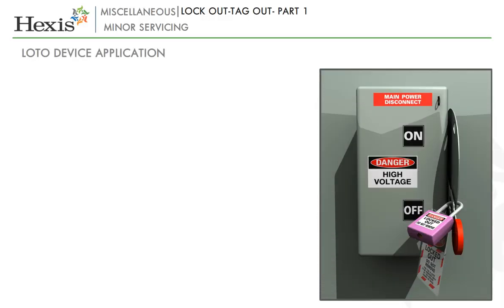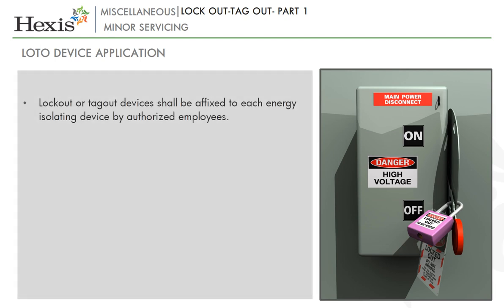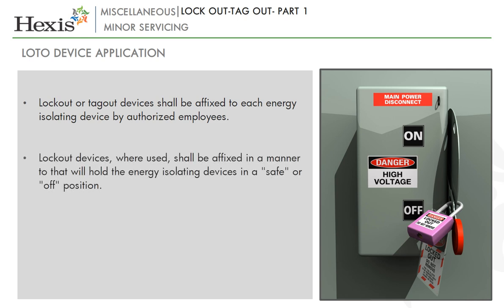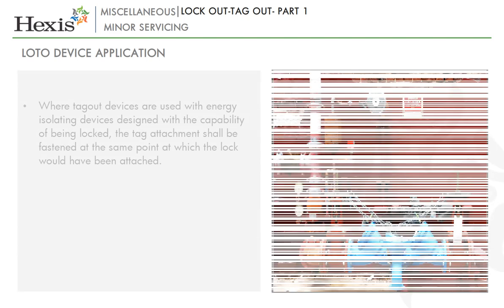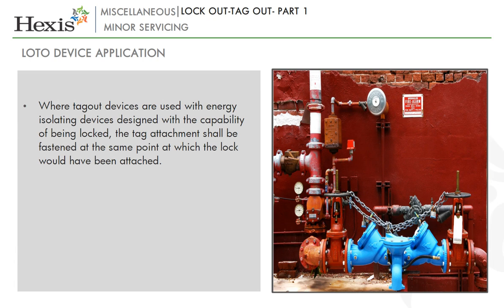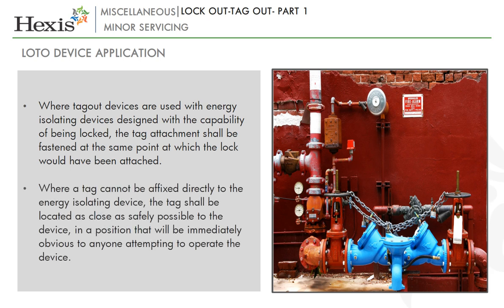Let us now learn the application of LOTO devices. Lock-out or tag-out devices shall be affixed to each energy isolating device by authorized employees. Lock-out devices, where used, shall be affixed in a manner that will hold the energy isolating devices in a safe or off position. Tag-out devices, where used, shall be affixed in such a manner as will clearly indicate that the operation or movement of energy isolating devices from the safe or off position is prohibited. Where tag-out devices are used with energy isolating devices designed with the capability of being locked, the tag attachment shall be fastened at the same point at which the lock would have been attached. Where a tag cannot be affixed directly to the energy isolating device, the tag shall be located as closely as safely possible to the device, in a position that will be immediately obvious to anyone attempting to operate the device.